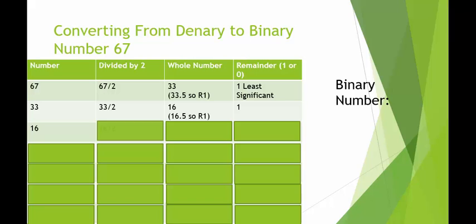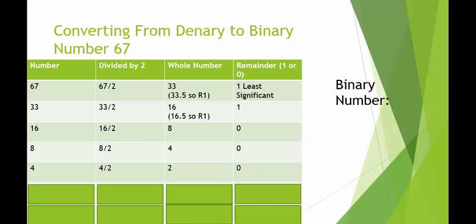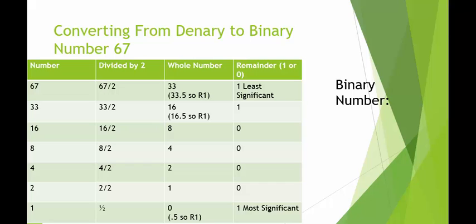I take my new number 16, divide by two, I get eight — no decimal, no remainder. Eight divided by two is four — no decimal, no remainder. Four divided by two is two — no decimal, no remainder. I take my new number two, divide that by two, I get one — no decimal, no remainder. I've reached one, so I'm on my last step. I take one, one divided by two is 0.5. My whole number is zero; the 0.5 gives me a remainder of one, my most significant digit. We read it from the bottom to the top, and my binary number for 67 is 1000011.